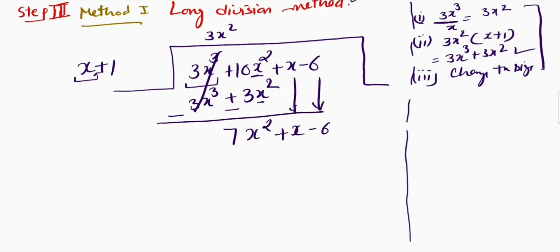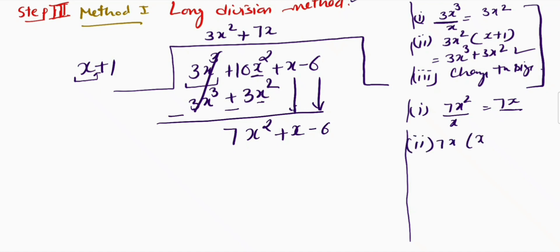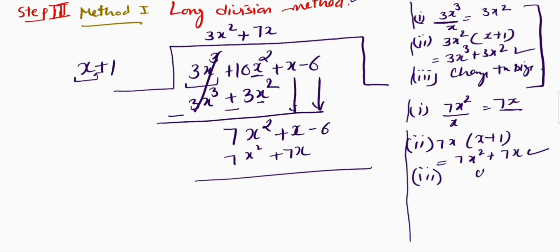We repeat the three steps. Divide 7x² by x to get 7x. Write +7x in the quotient. Multiply 7x by (x + 1) to get 7x² + 7x. Change the sign — both become negative, they cancel. Subtracting gives −6x.